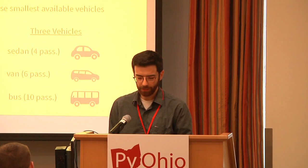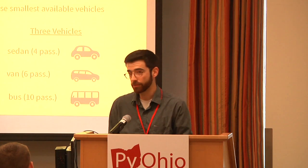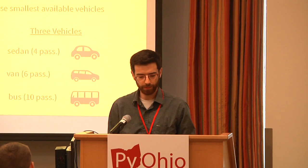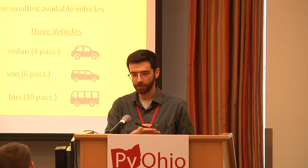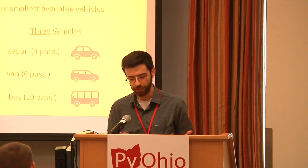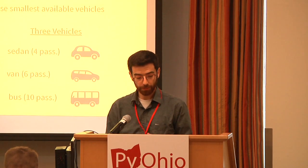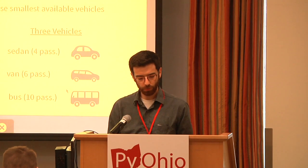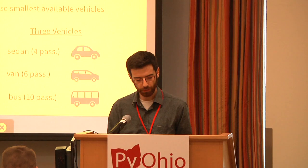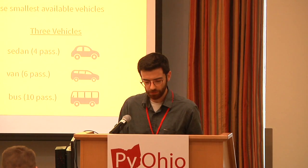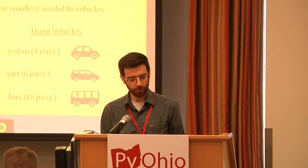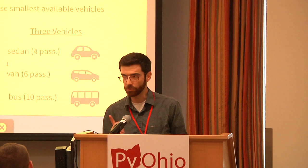The second constraint: you obviously can't use any vehicle for any route — vehicles are too small for certain routes. I'll call these capacity constraints. You have to make sure the vehicle you assign has sufficient capacity to handle the route. The third type of constraint: if we have two routes that overlap in time, we can't use the same vehicle for both because that vehicle cannot be in two places at the same time. These are overlap constraints — you can't assign a vehicle to two routes if those two routes overlap in time.